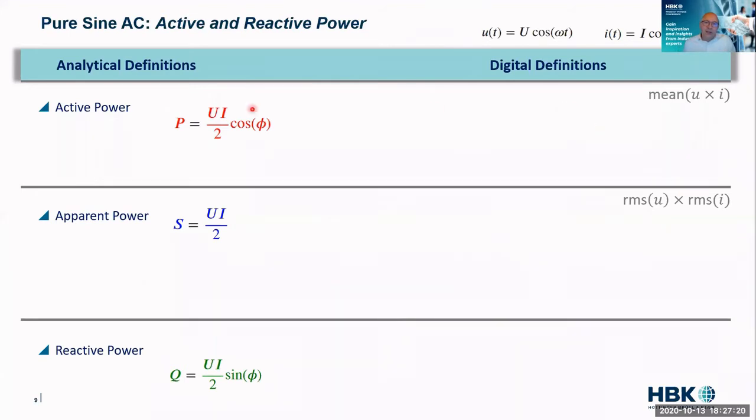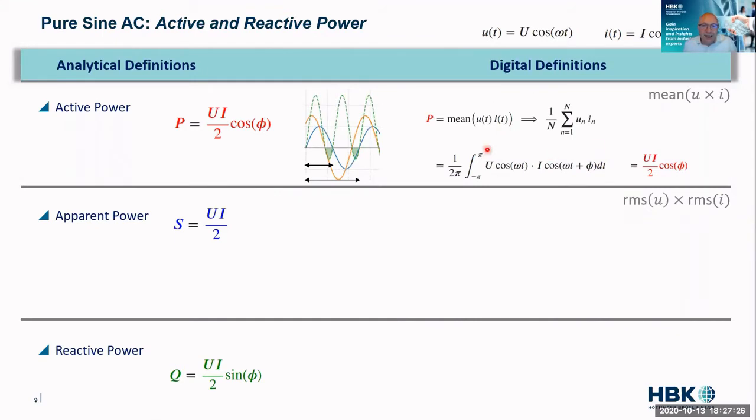So the definition of active power is the mean of the voltage times the current. And actually, if we work that out, if we look at the mean, take the area under this, now remember, we take the area and we integrate,